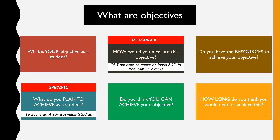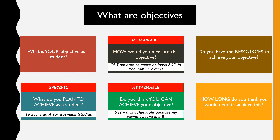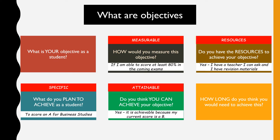You need to ensure that your objective to score an A is something attainable — something you would be able to achieve. For example, you would say: yes, it is achievable because my current score is a B, so it's closer to reaching an A. Next, you need to look at the resources or important items you need. As a student, you would say: yes, I have a teacher I can ask, and I also have revision materials.